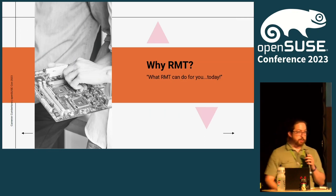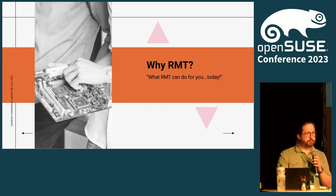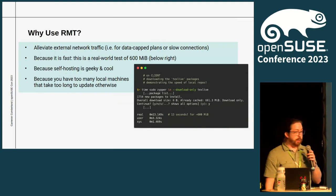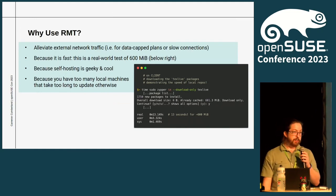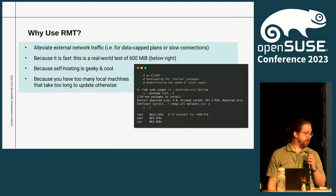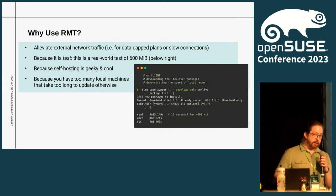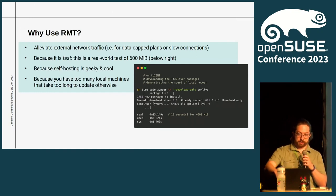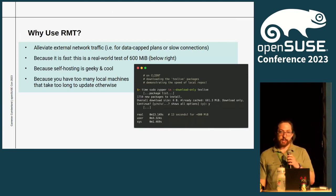Why RMT? Why should you go through the trouble spending about 25 minutes setting this up? Your time is precious — 25 minutes you could do anything, that's like three espressos. To alleviate external network traffic is one of the big ones. If you have data-capped plans or really slow connections — my parents have a 25 megabyte per second limit. Downloading Tumbleweed updates when it's a gigabyte every couple of days is painful. It's also fast: I was able to download texlive packages in about 13 seconds from my local RMT server to this laptop right here.